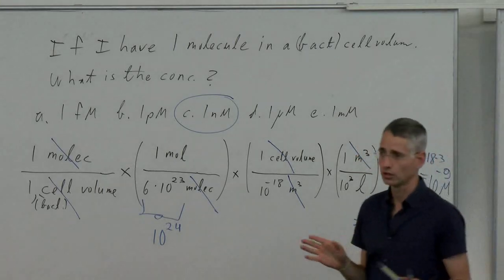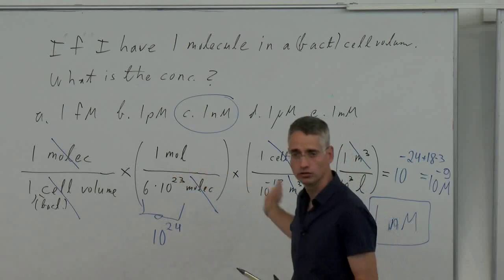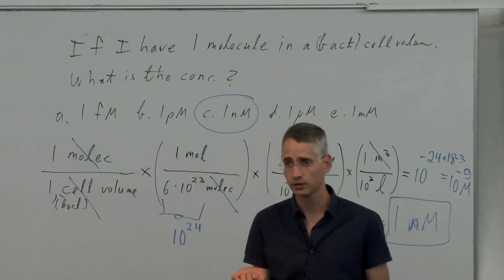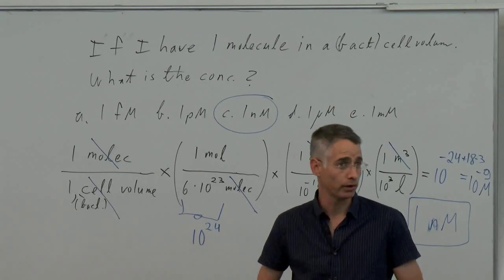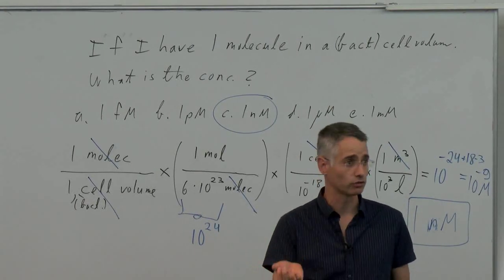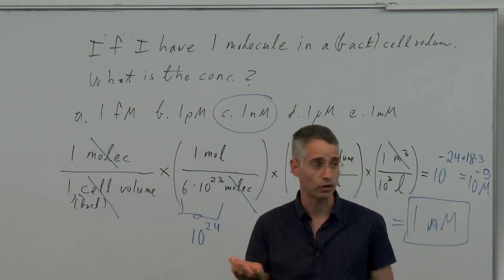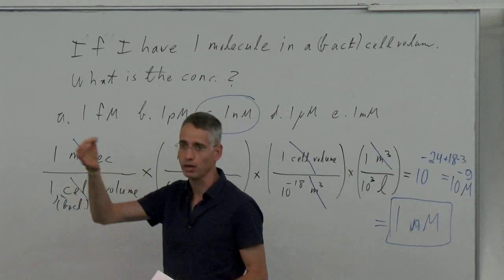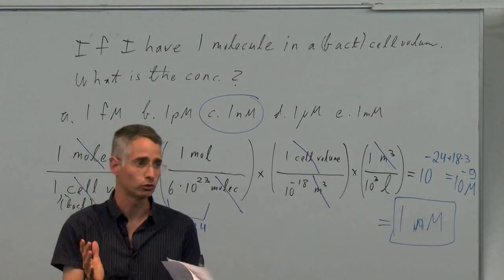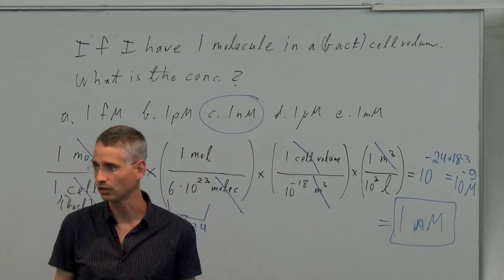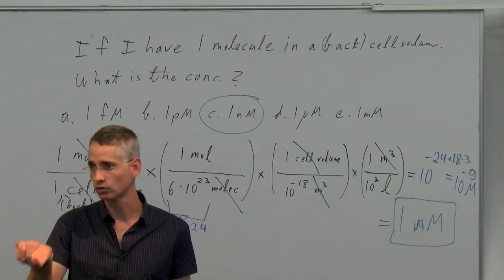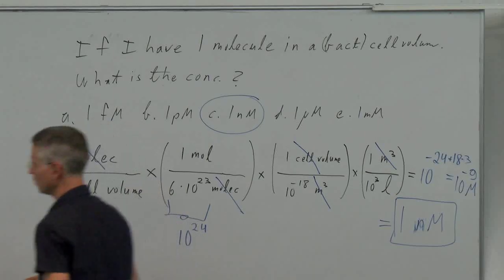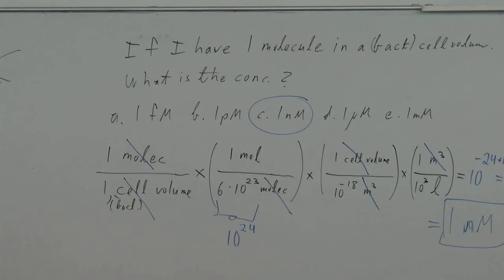So on one hand, there's a message here about unit conversion and its usefulness. But there's also a rule of thumb: if I have one molecule in one micron cube — a characteristic bacterial cell volume — that means I have a concentration of one nanomolar.